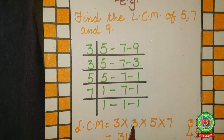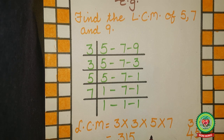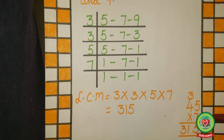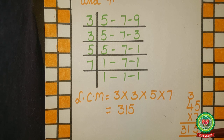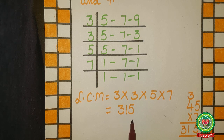Now multiply: 3 × 3 = 9, 9 × 5 = 45. For 45 × 7: 7 × 5 = 35, write 5 and carry 3; 7 × 4 = 28, plus 3 = 31. So LCM equals 315. Therefore the LCM of 5, 7, and 9 is 315.